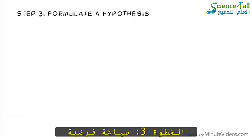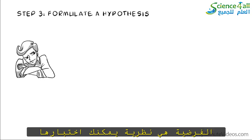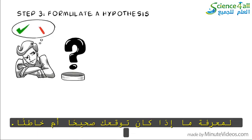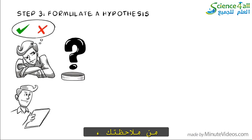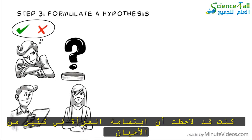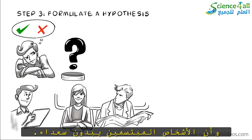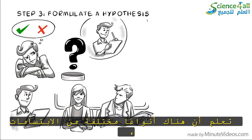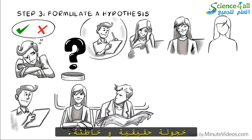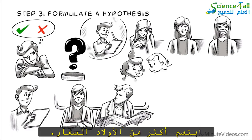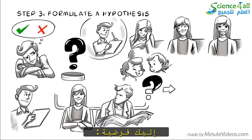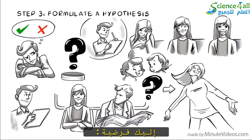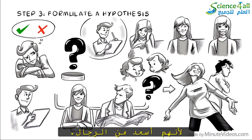Step 3: Formulate a hypothesis. A hypothesis is a theory that you can test to see if your prediction is right or wrong. From your observation, you have noticed that women smile more often and that people who are smiling seem to be happy. From your research, you know that there are different types of smiles — shy, genuine, and false. In one paper, you read that baby girls smile more often than baby boys. Here is a hypothesis: women smile more than men because they are happier than men.